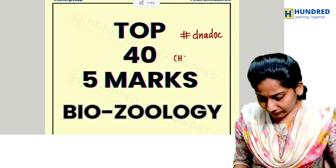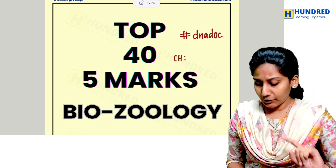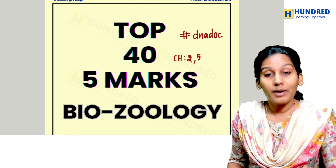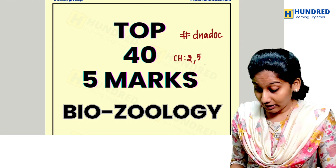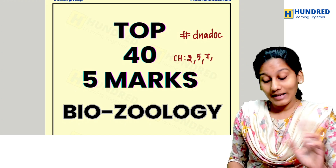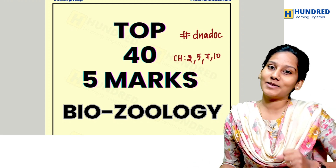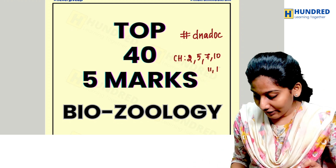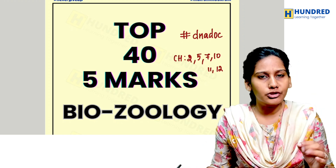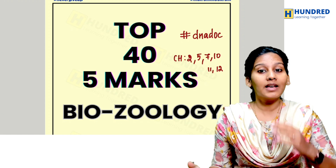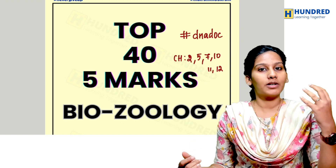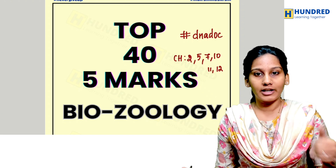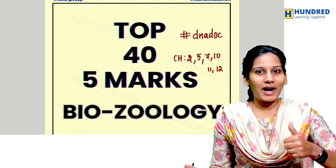For the 5-mark chapters, focus on Chapter 2: Human Reproduction and Molecular Genetics, Human Health and Diseases, Organisms and Population, and Biodiversity and Environment. In Chapter 6, you can target 10 out of 10 for the last 5-mark questions.